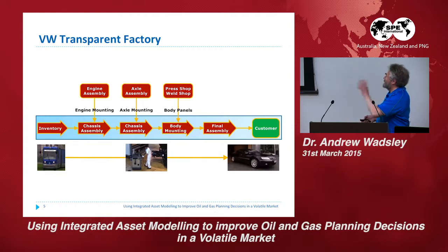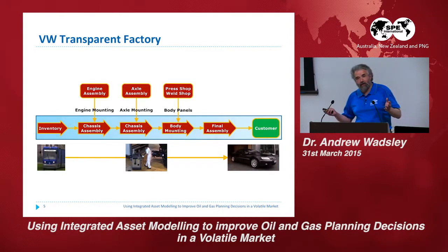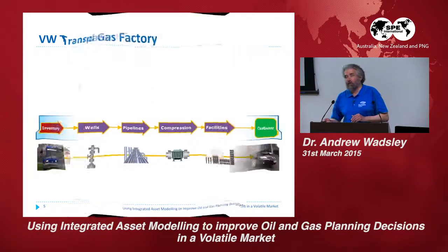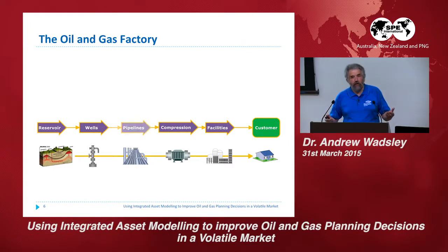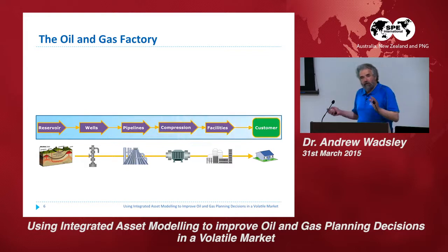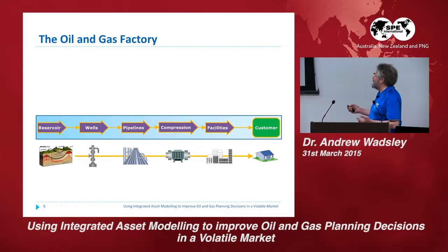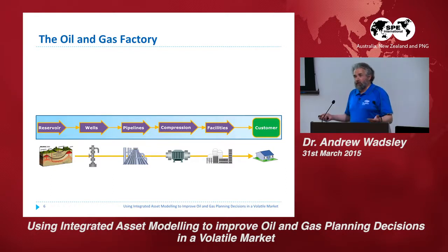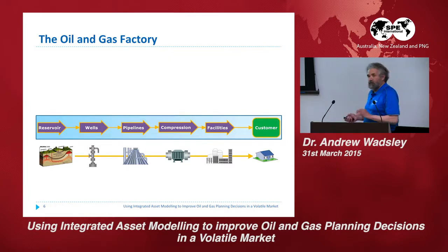I'm going to move from the Volkswagen factory to what we do in our industry, and look at it from an assembly point of view. This is what I call the oil and gas factory. It has reservoir, wells, pipelines, compression facilities, and customers — in different orders. Facilities could be offshore, there could be a separator, an onshore gas plant. Your customer could be dom gas, LNG, industrial gas, or power generation — but this is the basic line of workflow.